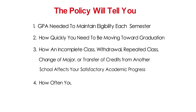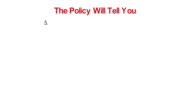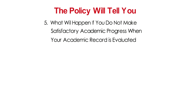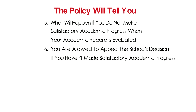The policy also explains how often your school will evaluate your progress, and what will happen if you do not make satisfactory academic progress when your academic record is evaluated. You are allowed to appeal your school's decision if you haven't made satisfactory academic progress.